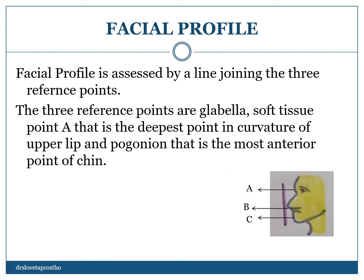Facial profile. How we see the facial profile — that is the first question the examiner will ask you. We see the facial profile from the side of the patient. Facial profile is assessed by a line joining three reference points as seen in the image: first is the glabella, marked as A; second is the soft tissue point A, the deepest point in the curvature of the upper lip, marked as B; and third is the pogonion, the anteriormost point on the chin, marked as C.